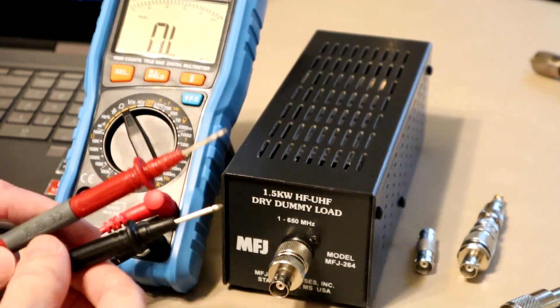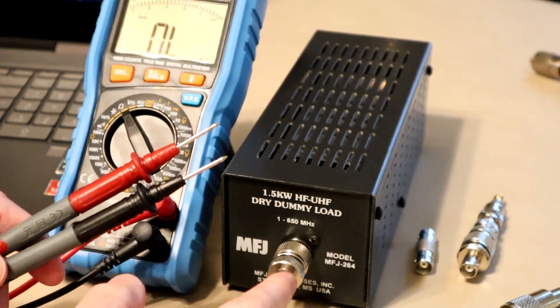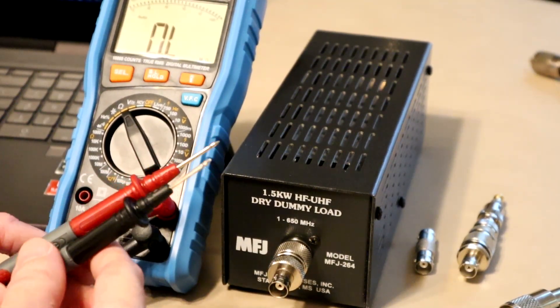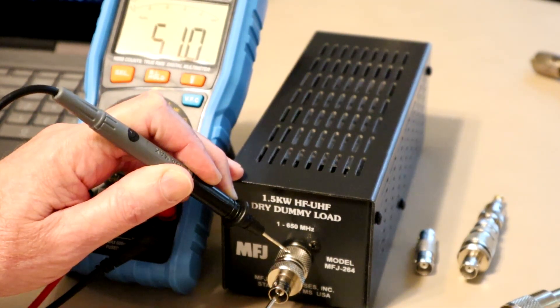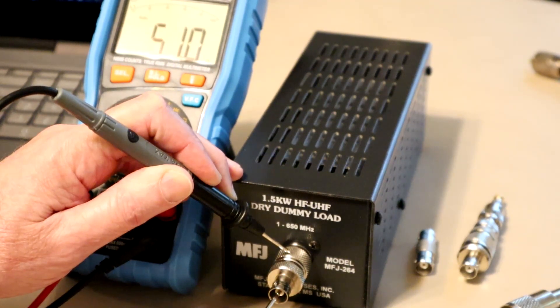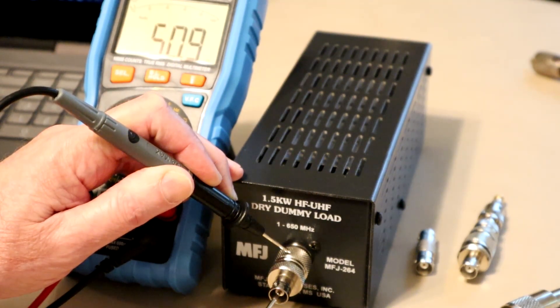At low frequencies we don't have to hook up to the dummy load with a coaxial cable, we can just measure the resistance. And if I back out of the way here you can see it reads 51.0 ohms. So it's pretty close to 50 ohms. Actually 50.9.